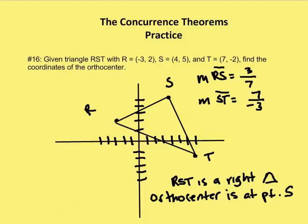This is an interesting question, because as we find out, the slope of RS is 3/7 and the slope of ST is -7/3. We see that RS and ST are perpendicular — this is actually a right triangle. In a right triangle, the orthocenter is going to be at one of the vertices, specifically where the right angle is. If we didn't have a right triangle, we'd find the altitudes of two of the three sides, then solve for x and y for both equations.